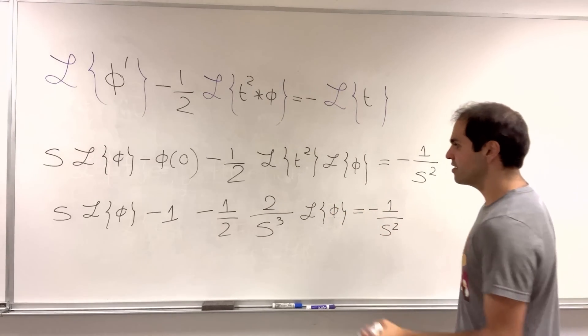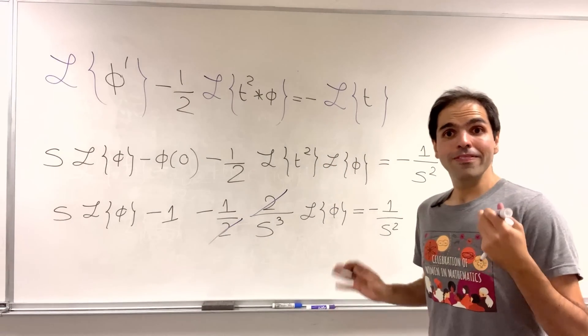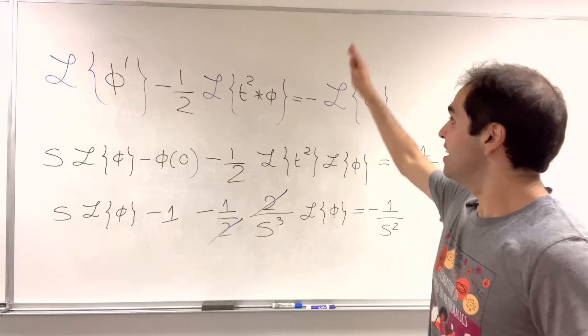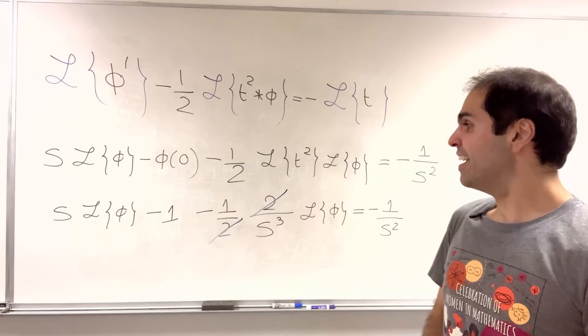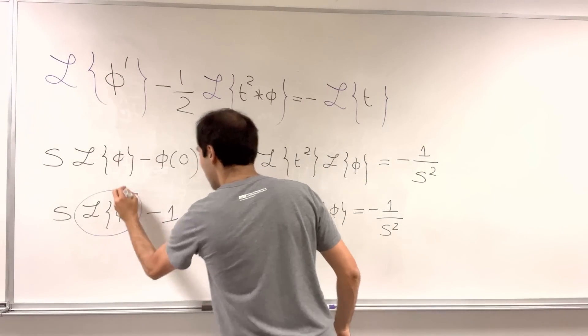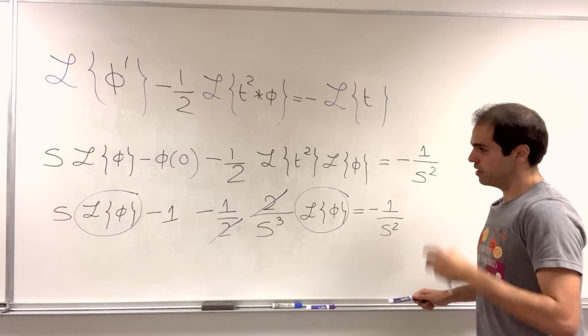And now there's this nice simplification here. The two cancel out, and most importantly, there is no more derivative. Instead, we just have an algebra equation for L of phi, which we want to solve for now.